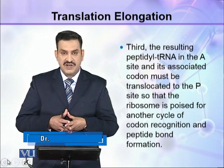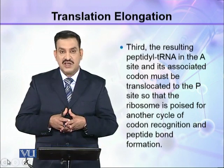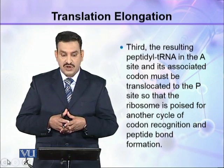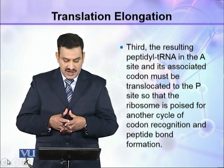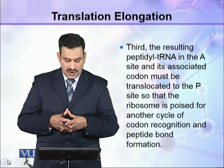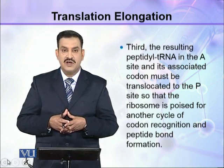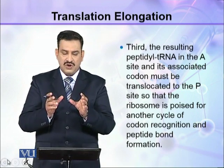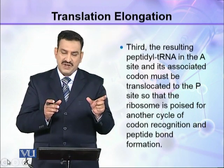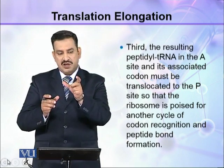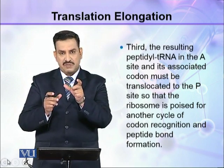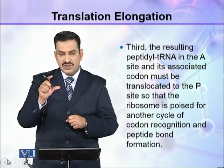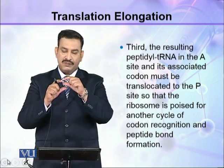Third, the resulting peptidyl tRNA in the A-site and its associated codon must be translocated to the P-site so that the ribosome is poised for another cycle of codon recognition and peptide formation. When the peptide bond is formed, the polypeptide is transferred from the amino acid tRNA in the P-site to the amino acid tRNA in the A-site.